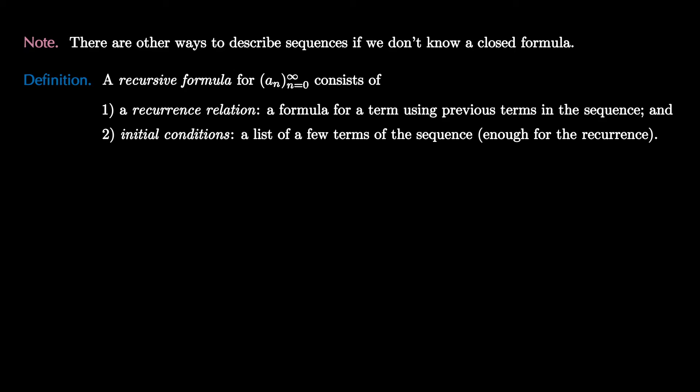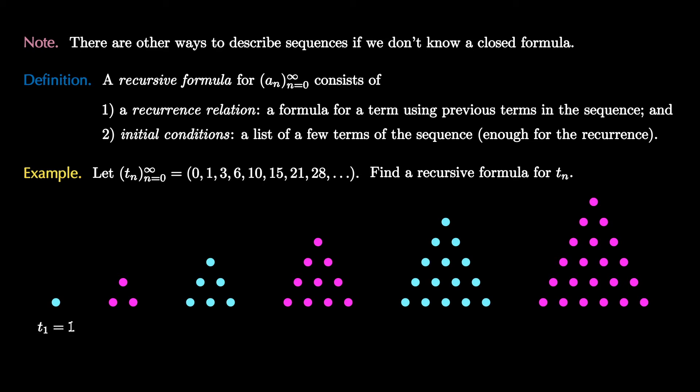Let's see another example. Suppose that we have the sequence tₙ, which is given by the numbers 0, 1, 3, 6, 10, 15, 21, 28. Let's find a recursive formula for tₙ. In this case, it helps to notice that these numbers are counting the number of dots in these triangular arrays.